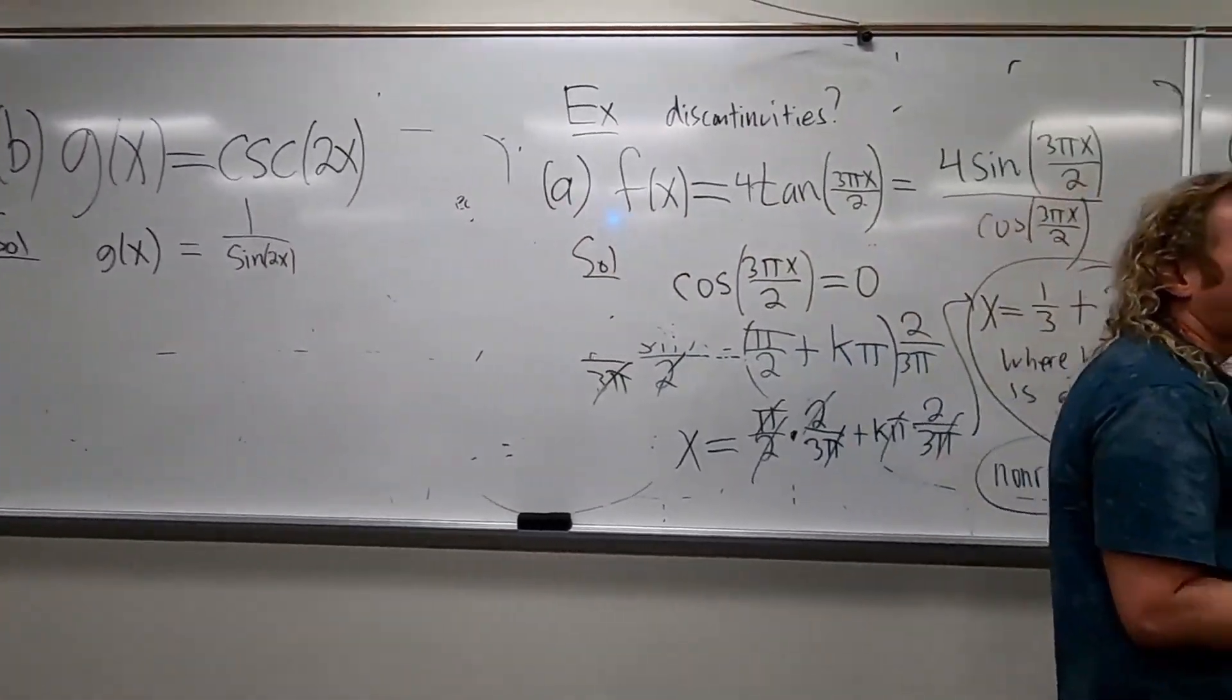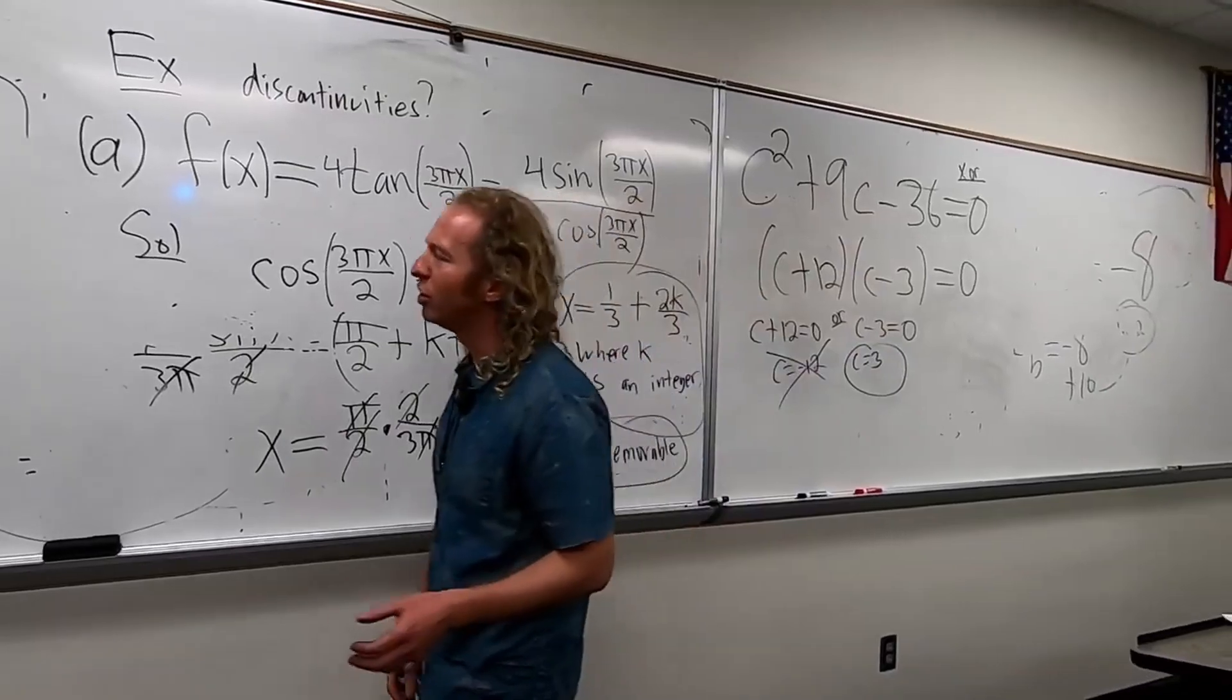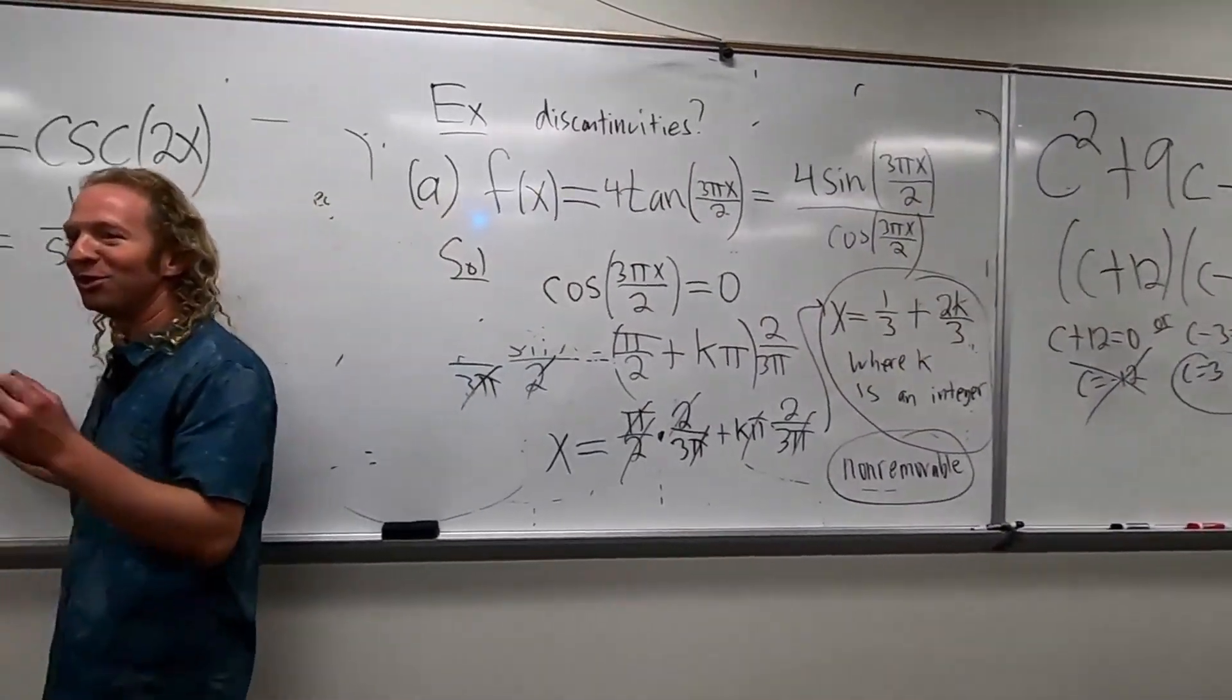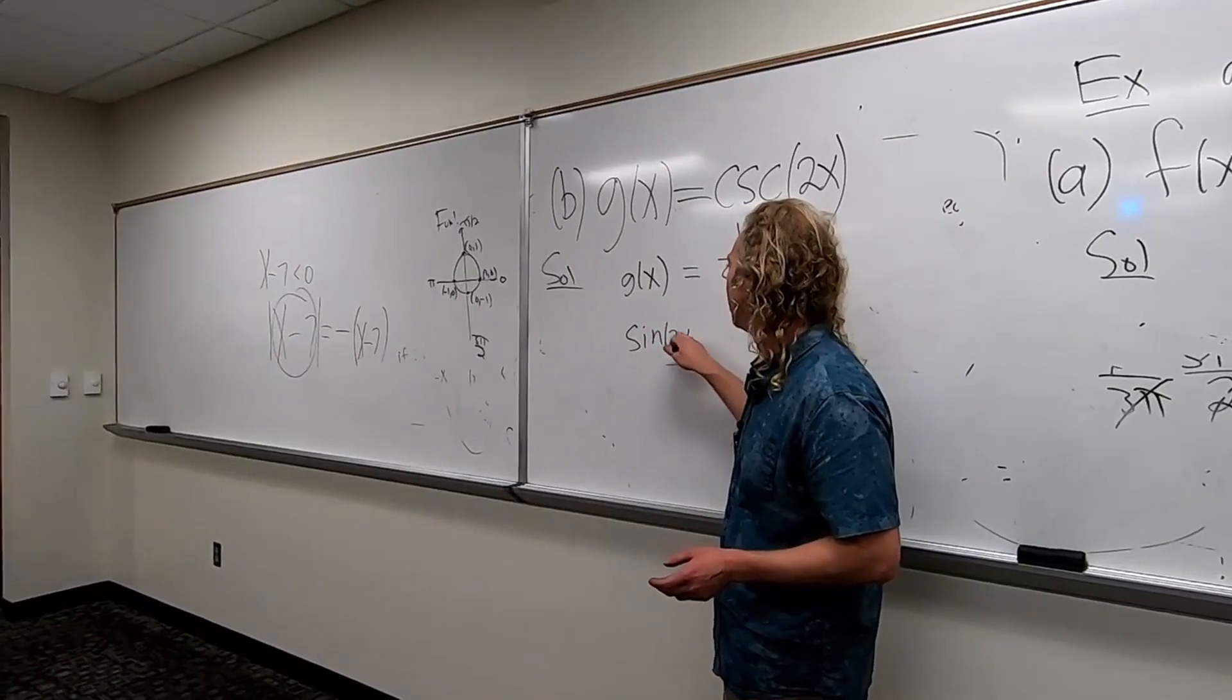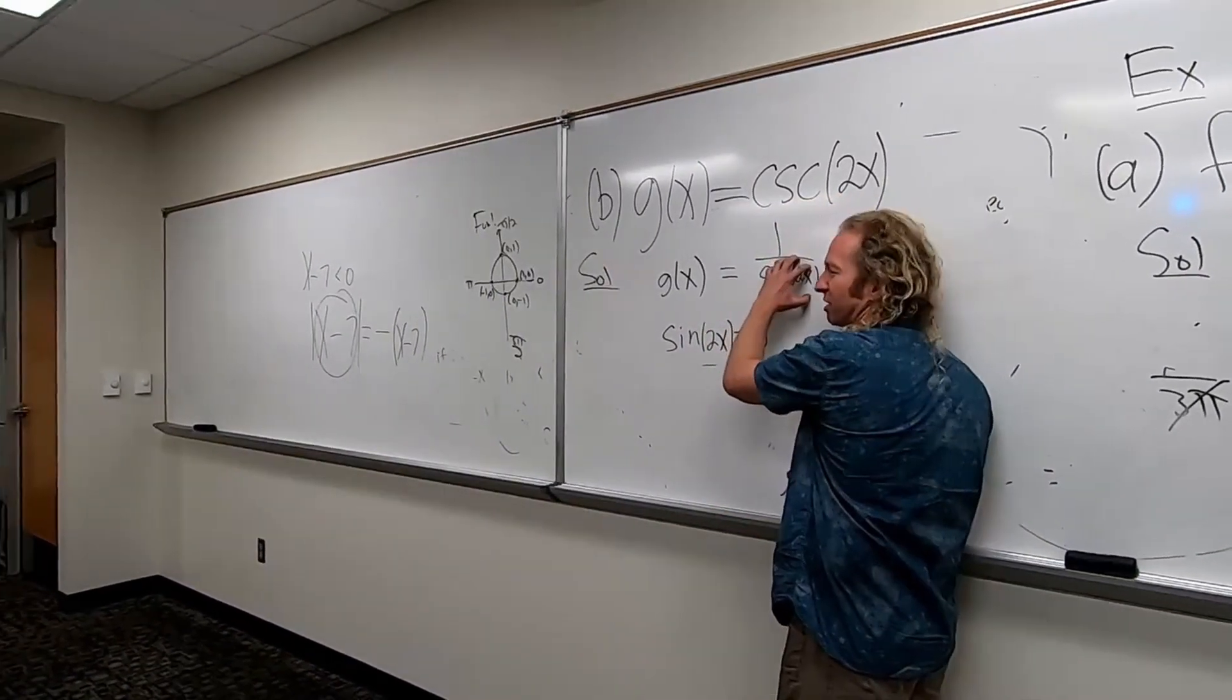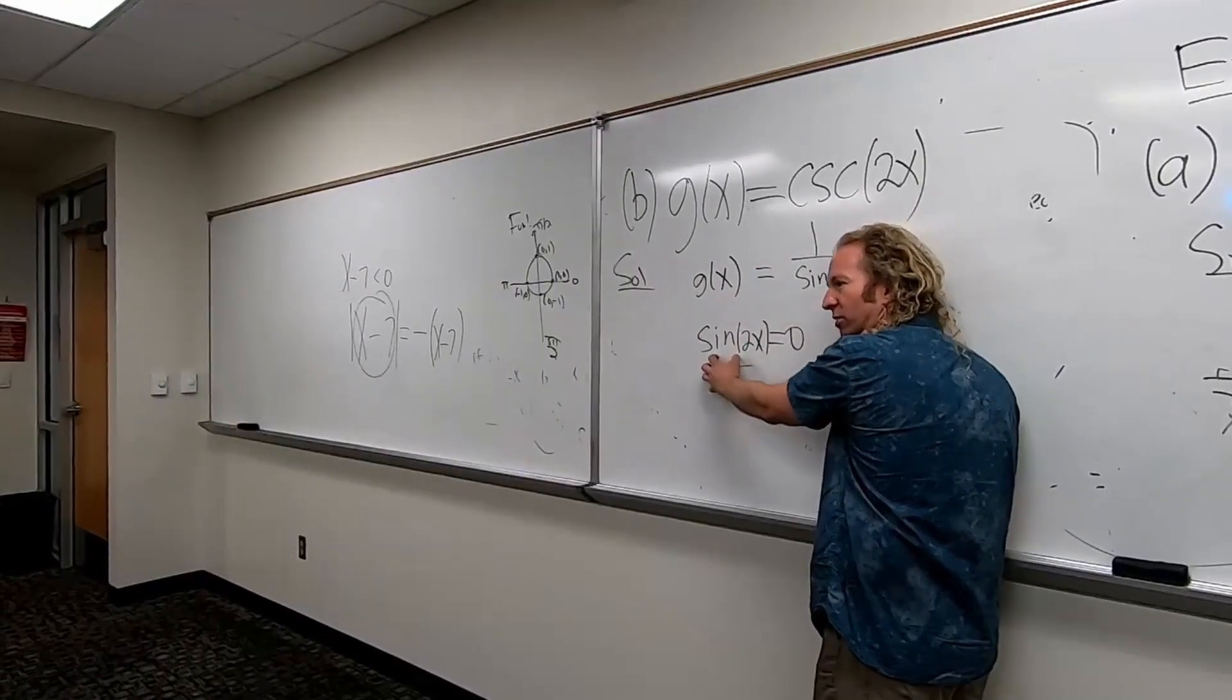Then you have to think about when this is undefined. That's going to happen when the denominator is equal to 0. So that means that sine 2x equals 0, right? Because you're trying to find out when this is undefined, so you always just take this and set it equal to 0.